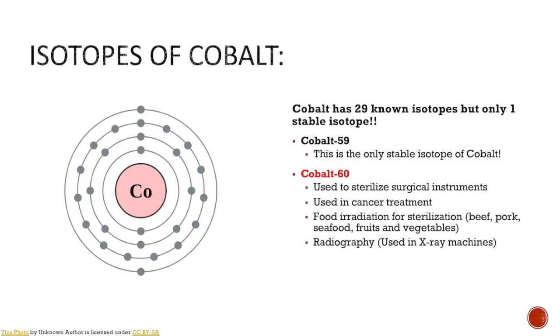The last element we're going to talk about is cobalt. Cobalt has 29 known isotopes, but only one stable isotope. Cobalt-59 is the only stable isotope. Cobalt-60 is a very handy radioactive isotope that's used for sterilizing surgical instruments.